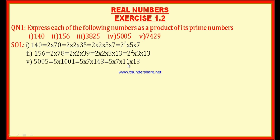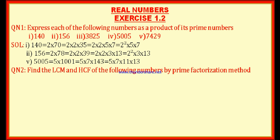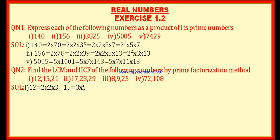Question number 2: find the LCM and HCF of the following numbers by the prime factorization method. The bits are: (1) 12, 15, 21; (2) 17, 23, 29; (3) 8, 9, 25; (4) 72 and 108. We will solve two bits. For the first bit — 12, 15, 21 — we factorize: 12 = 2 × 2 × 3, 15 = 3 × 5, and 21 = 3 × 7.